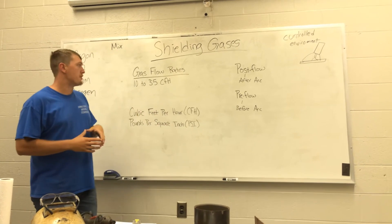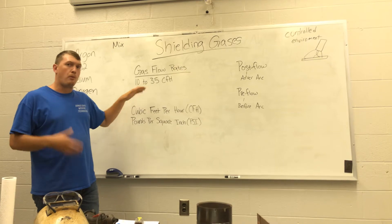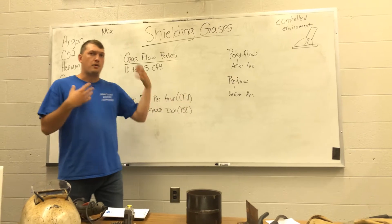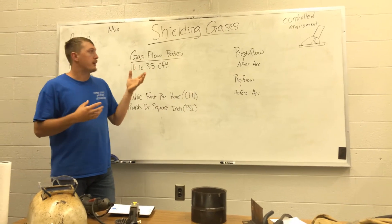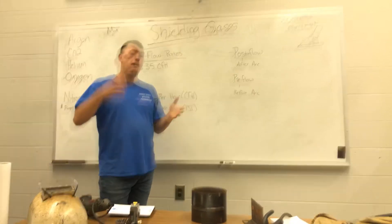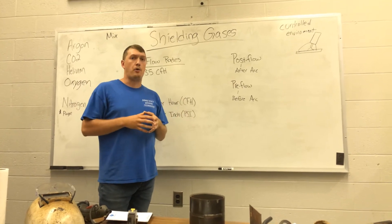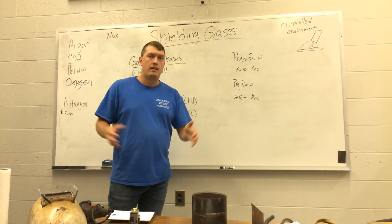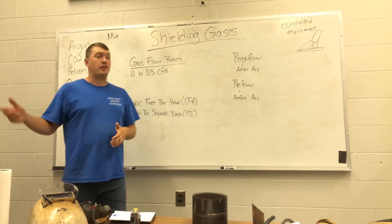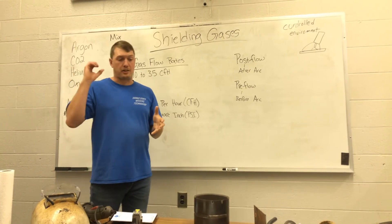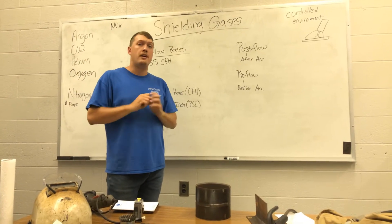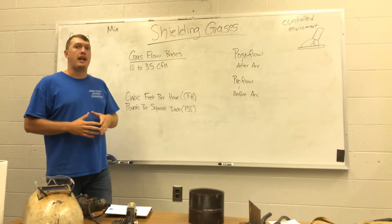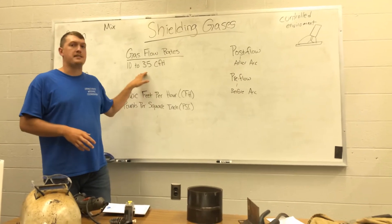Because what we do is we actually measure the volume of the bottle — how much is in the bottle — by PSI. But how much we're using, the gas flow rate, we measure in CFH. Two totally different things. To give you an example, if we were in a windy application — say we're outside on top of a building and wind started gusting — we might have to turn that gas flow rate up to get more gas coverage on our weld. We can also have too much gas coverage. If we crank it up to 50 or 60 CFH in a controlled shop environment, it can actually blow so hard that it creates turbulence and blows our shielding gas off the weld. So we want to dial in the gas flow rate the right way.